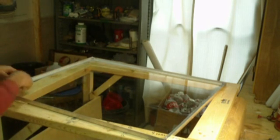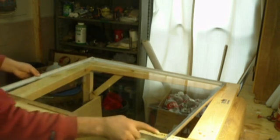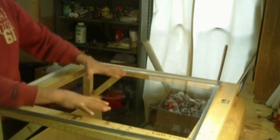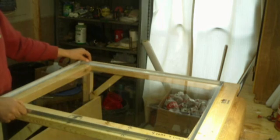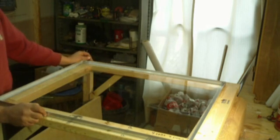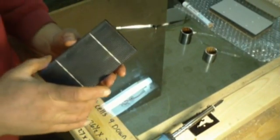Before I put the glass in, I put a nice big bead of silicone around the frame, then I laid the glass in. What I've got to do next is tab all the cells together. That's what I'm going to be working on now. I'll put some tabbing wire on these cells.